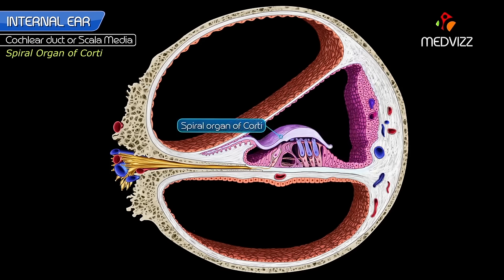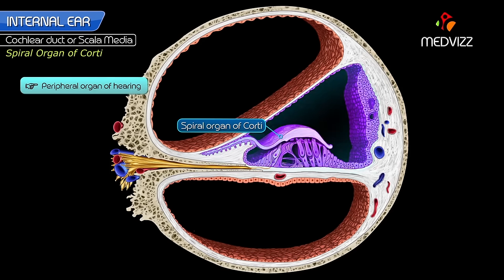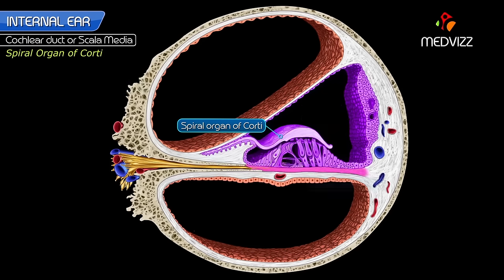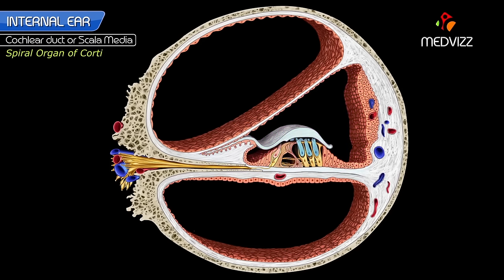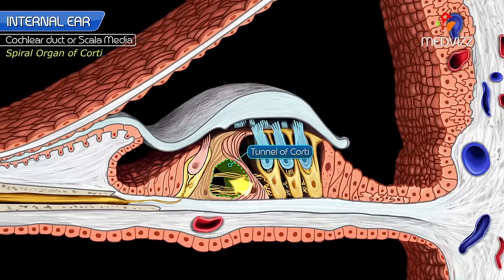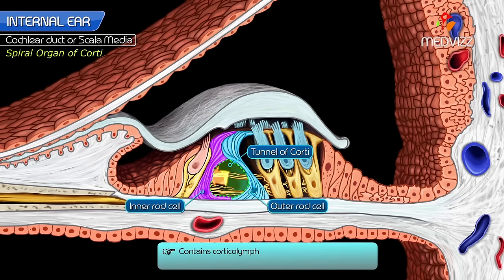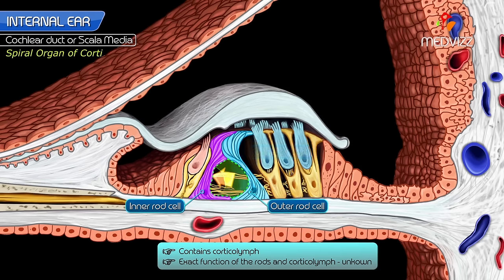The spiral organ of Corti is a peripheral organ of hearing located in the cochlear duct, situated on the basilar membrane. The tunnel of Corti is formed by the inner and outer rod cells and contains a fluid called cortilymph. The exact function of the rods and cortilymph is unknown.